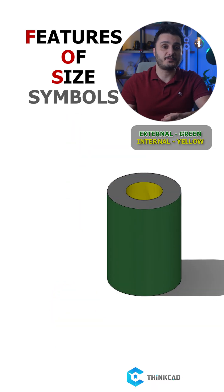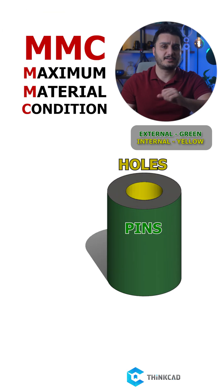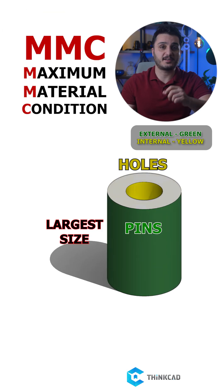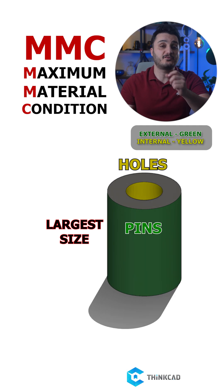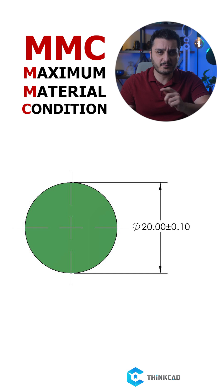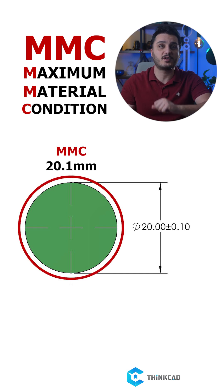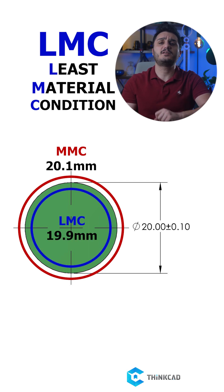For cylindrical features, we can have pins or holes. MMC for pins is simply their largest allowed size, because this is where we have the maximum amount of material. So for a 20mm diameter pin with a tolerance of plus and minus 0.1mm, MMC would be 20.1mm. LMC is the exact opposite, meaning the smallest size, which is 19.9mm here.